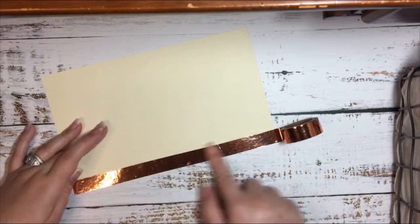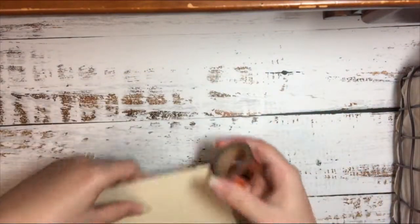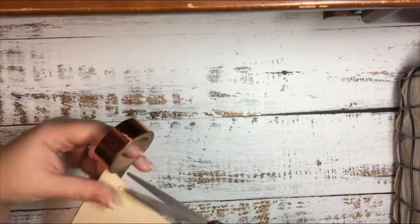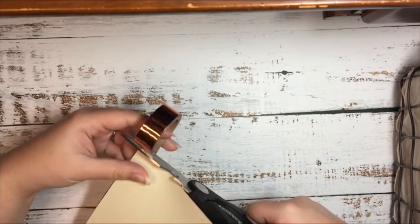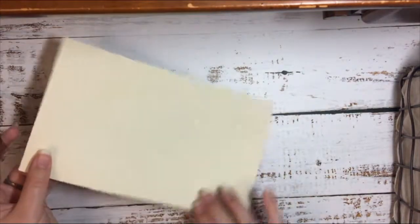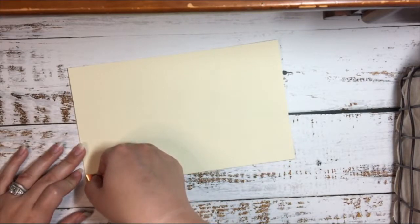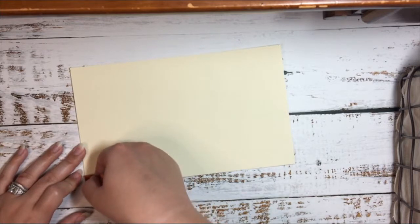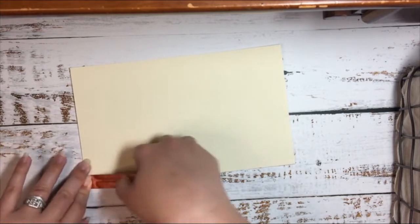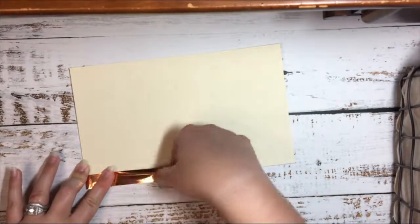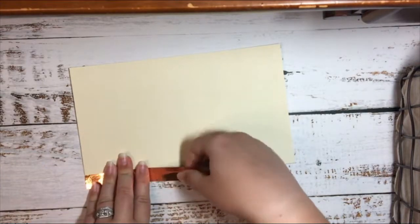I'm going to smooth it out, grab my scissors, and trim. Then on the opposite side, flipping from here to here, I'm going to do the same thing on the edge.